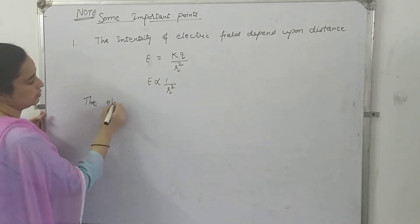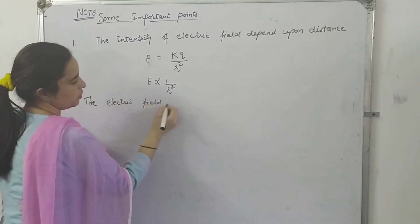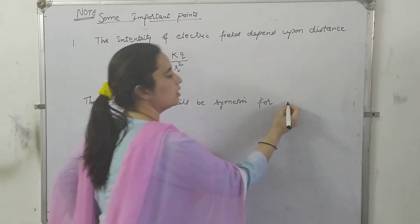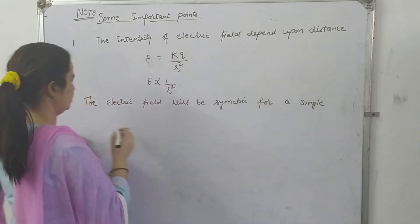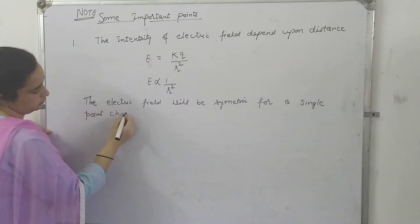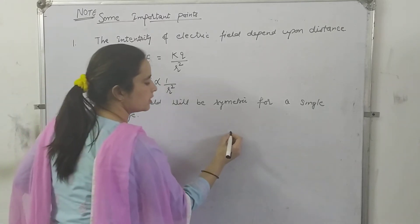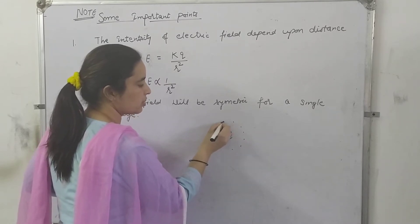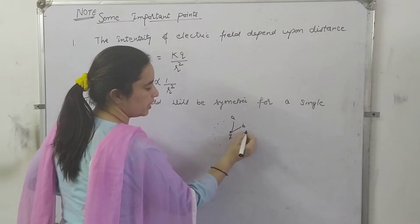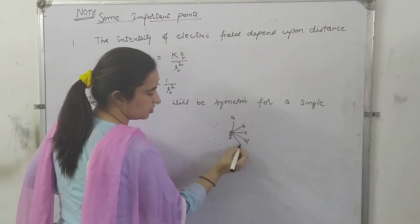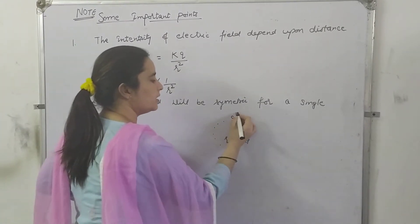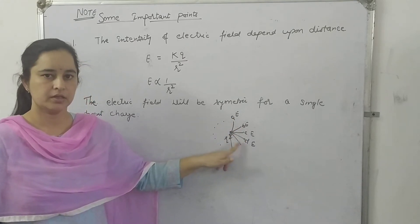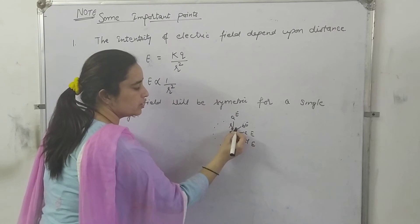The electric field will be symmetric for a single point charge. It means if we have a single point charge, then the electric field at every point which is at equal distance from this charge will be the same — at point A, B, C, D. Any point which is at equal distance from the charge will have the same electric field strength, if the distance between them is the same.